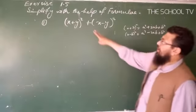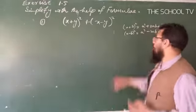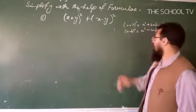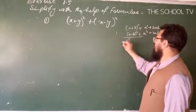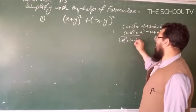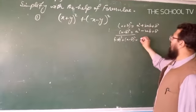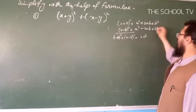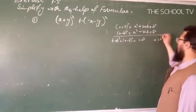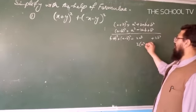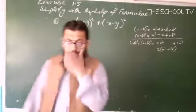From these first two formulas, a third formula is derived. If we add them — (a + b)² + (a - b)² — then a² and a² become 2a², b² and b² become 2b², and the 2ab terms cancel out. Taking 2 common gives us: 2(a² + b²).